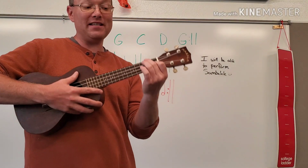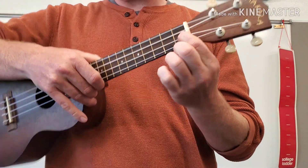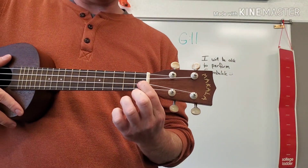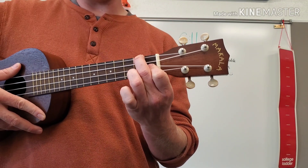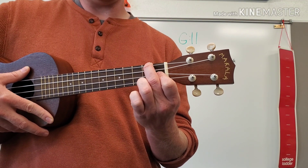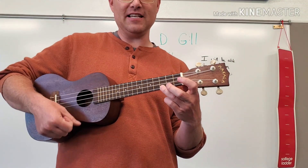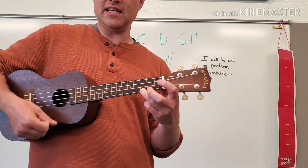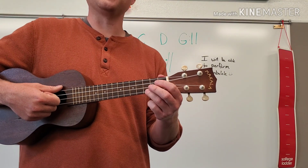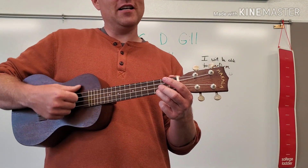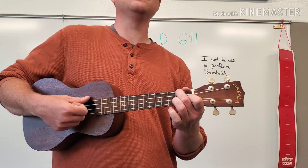And then there's going to be C. Remember, C is first finger, first fret, second string. And up top is the second finger in the second fret — so this is C. So the chord sequence goes: G, G, G, G, C, C, C, C.